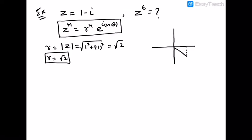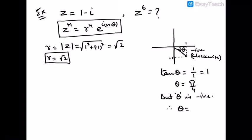Now for theta, we know that z equals 1 minus i will fall in the fourth quadrant and make angle theta in clockwise direction, so theta will be negative here. Tan theta equals 1, so theta is pi by 4, but theta is negative, so we get theta equals minus pi by 4.